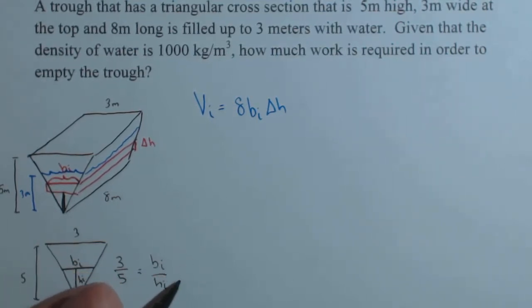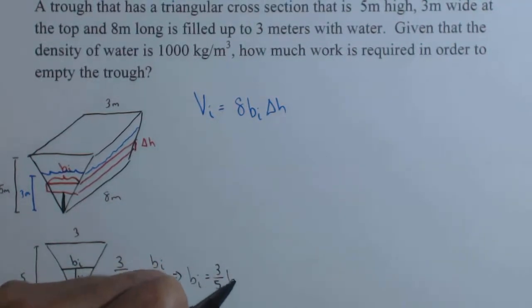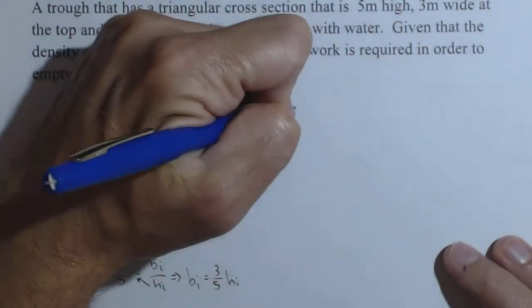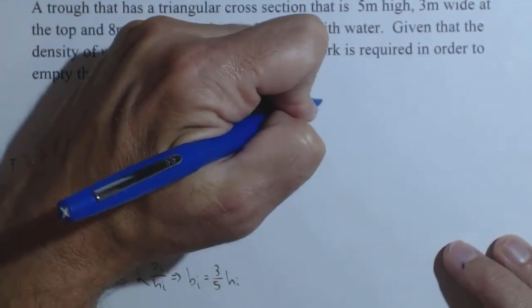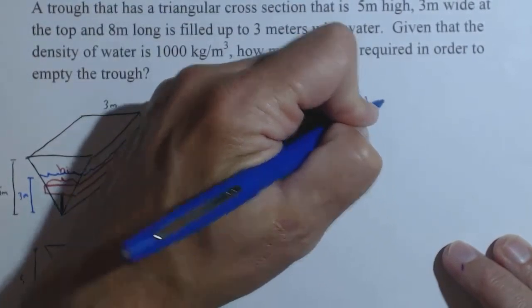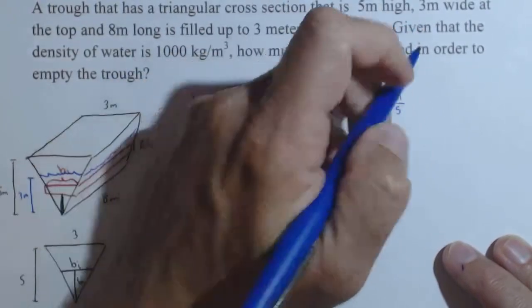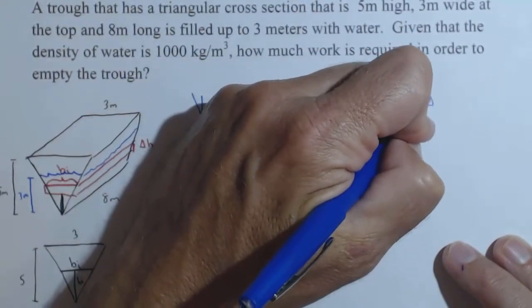We want this solved for b sub i, so we can substitute. So b sub i equals, I cross multiply the H sub i, three-fifths H sub i. That was a little bit of scratch work. It's going to get this all in terms of one variable. So, 8 times three-fifths H sub i delta H, or 24 fifths H sub i delta H.